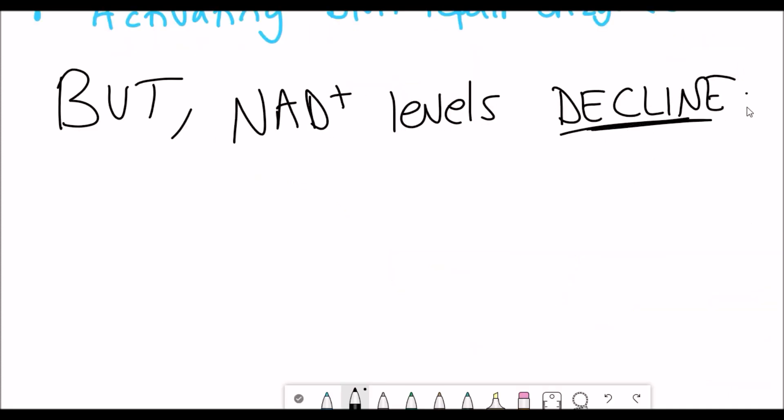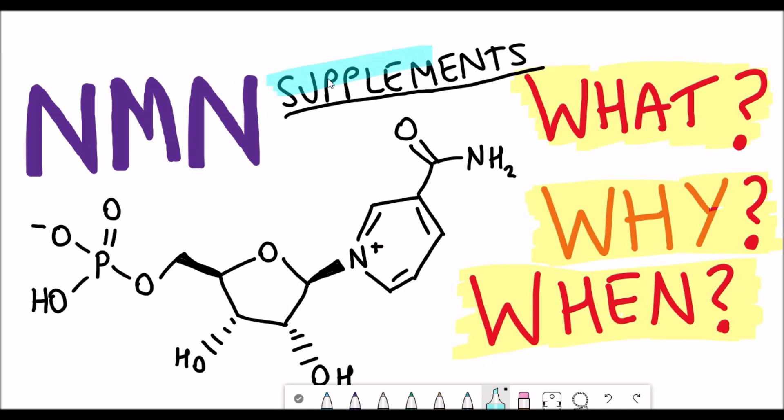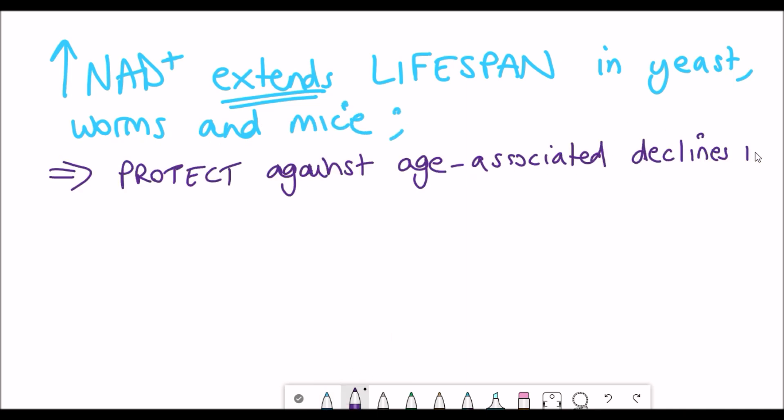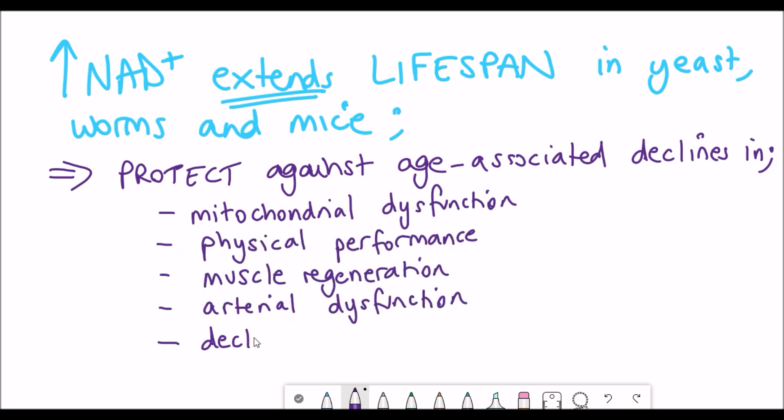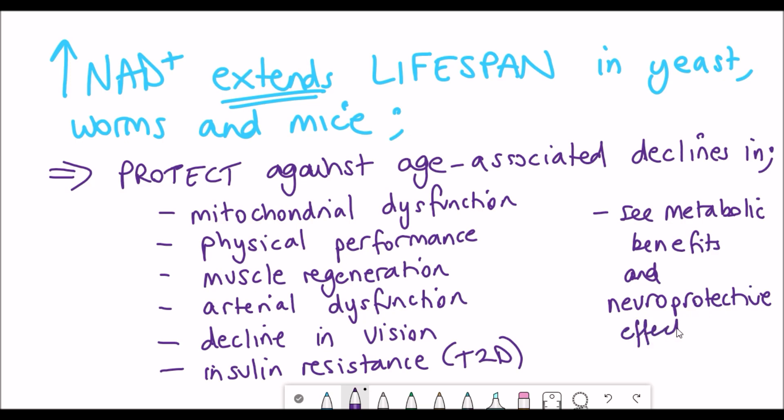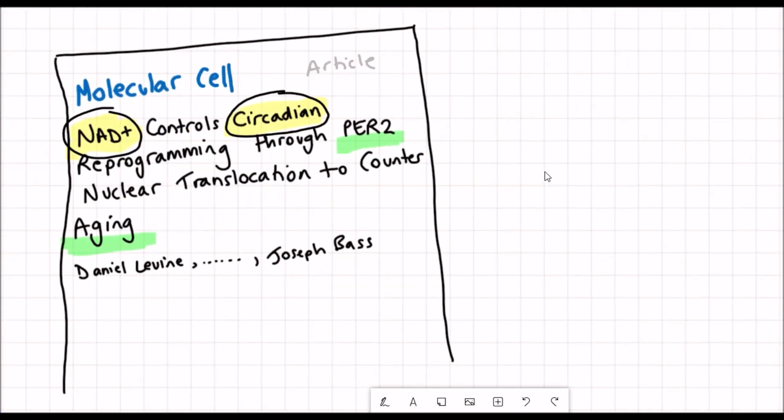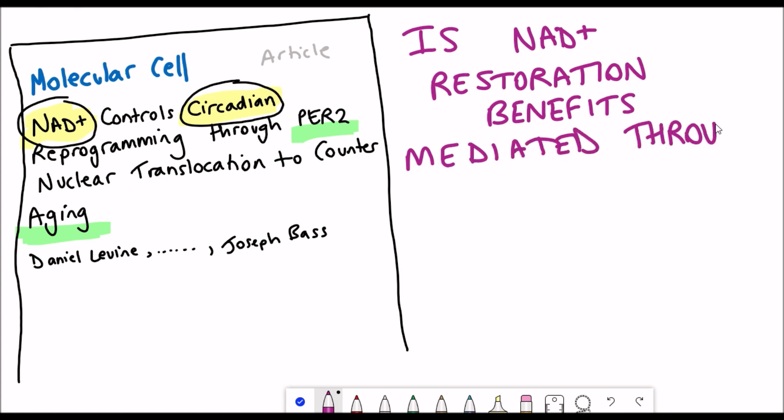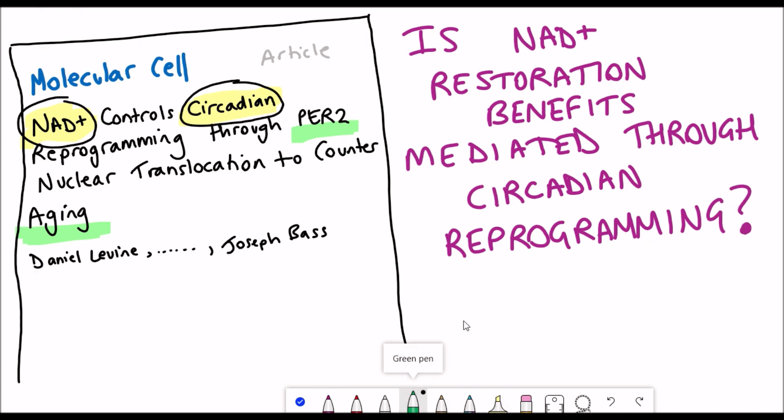What else do we know about ageing? Well, one observation is that NAD+ levels decline as you age. Interestingly, taking supplements such as NMN that can increase the levels of NAD+ have been shown to extend lifespan in yeast, worms and mice, and also to protect against age-associated declines in mitochondrial dysfunction, physical performance, and other factors. So if NAD+ levels decline as we age, and there's also a loss of robustness of the circadian rhythm as we age, and circadian disruption is associated with metabolic disorders, which can be improved from NAD+ restoration, what is the connection between NAD+ and how is that mediated potentially through circadian reprogramming?